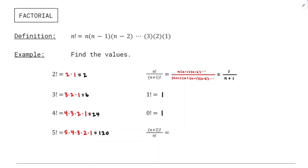Now with n plus 2 factorial over n factorial — that shouldn't need to happen all that often, but I'll show you what happens. I'm going to write out n plus 2 factorial: that's n plus 2 times n plus 1 times n and the rest of them. When I say n and the rest of them, well, that's just n factorial. So I'll put n factorial up there, then divide by n factorial, and then I can cancel off the n factorials. That'll just leave me with n plus 2 times n plus 1.